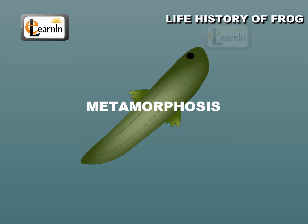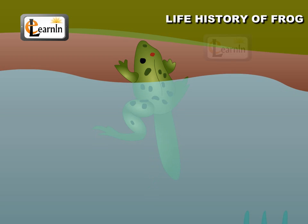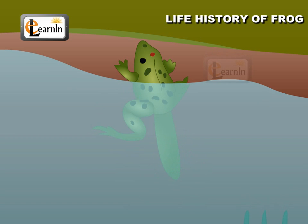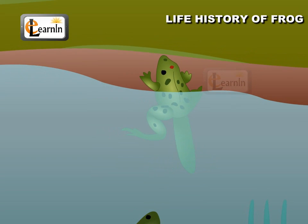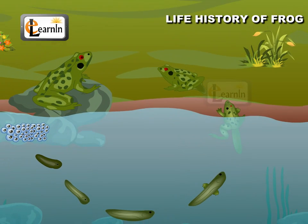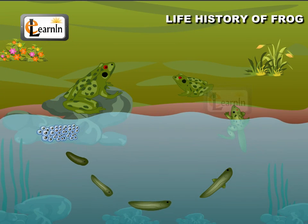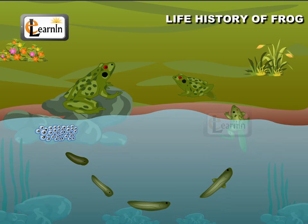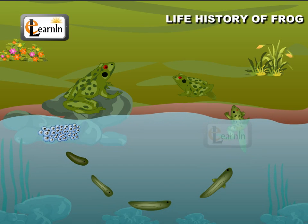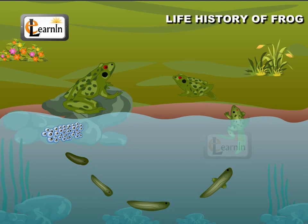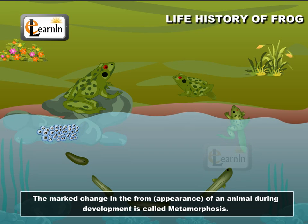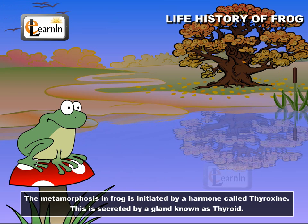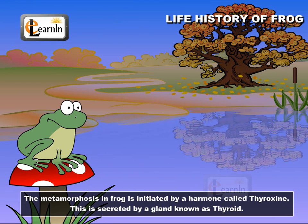Metamorphosis. A series of changes take place in the tadpole internally and externally to transform it into an adult frog. The tadpole larva of a frog is fish-like. It lives in water and breathes through gills. It grows in size and slowly transforms into a frog. During this transformation, the four limbs appear. At the same time, gills disappear and lungs will develop. At this stage, the small frog leaves water as it cannot breathe with lungs in water. The tail persists for some more time but finally disappears. The marked change in the form of an animal during development is called metamorphosis. The metamorphosis in a frog is initiated by a hormone called thyroxin, secreted by a gland known as thyroid.